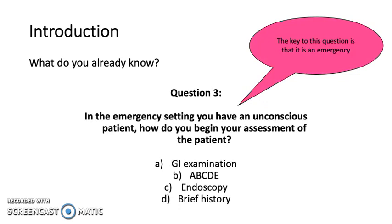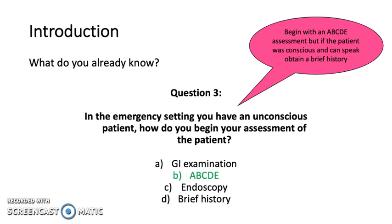Question 3: In the emergency setting, you have an unconscious patient. How do you begin your assessment? Is it A. GI examination, B. ABCDE, C. endoscopy, or D. brief history? The answer is B, ABCDE. Your patient is unconscious, so you will be unable to take a brief history. However, if they were conscious, do take a brief history, as this will guide where you look for the cause.